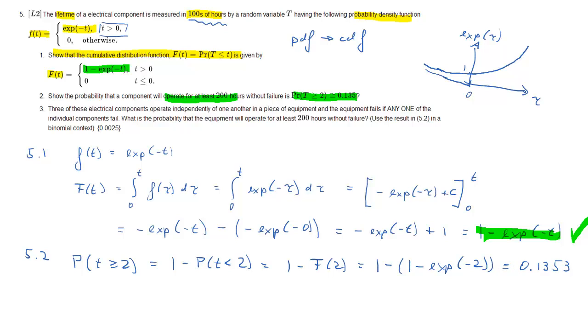So we have 1 minus the CDF evaluated at 2, so that's 1 minus 1 minus exponential of negative 2, and this is now just calculator work. Turns out this is indeed 0.1353.